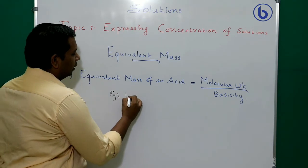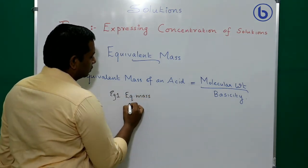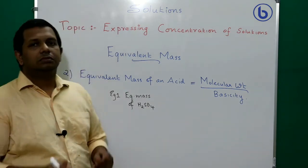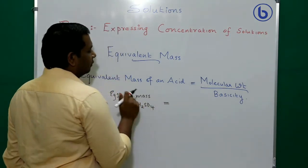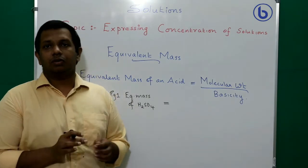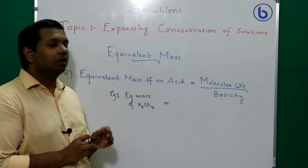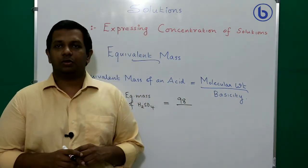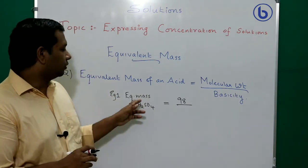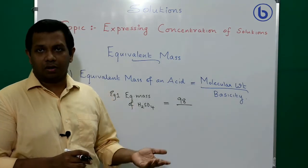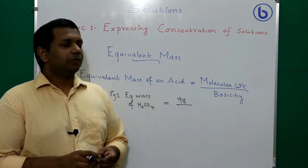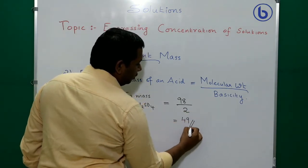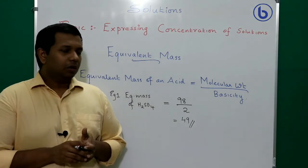Example 1: equivalent mass of sulfuric acid (H₂SO₄). Molecular weight: S = 32, O = 16 × 4 = 64, H = 2; total = 98. H₂SO₄ can donate 2 H⁺ ions — first giving HSO₄⁻, then SO₄²⁻ — so basicity = 2. Equivalent mass = 98 ÷ 2 = 49.